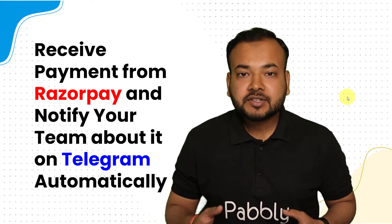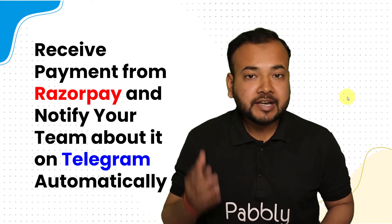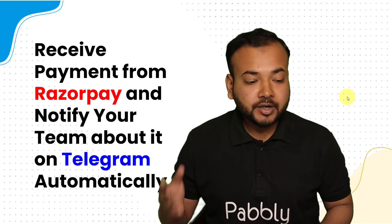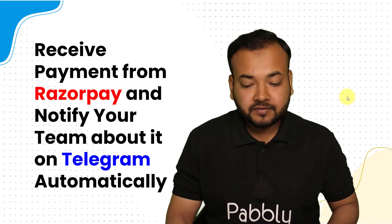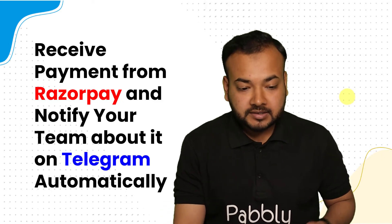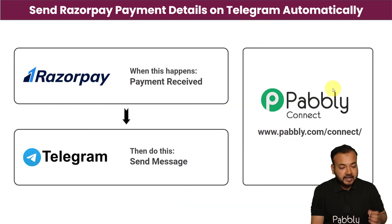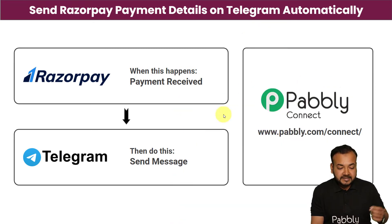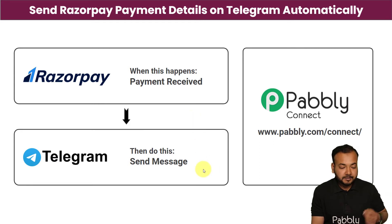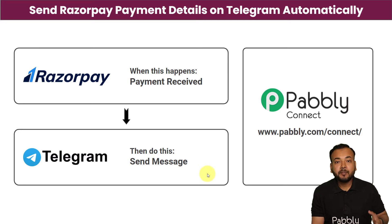Here is an automation technique which is going to make this task super easy for you, and this is how it is going to work: as and when you receive a payment via Razorpay, a message will be delivered to your team about this payment along with the product name and the payment details on your Telegram group automatically.